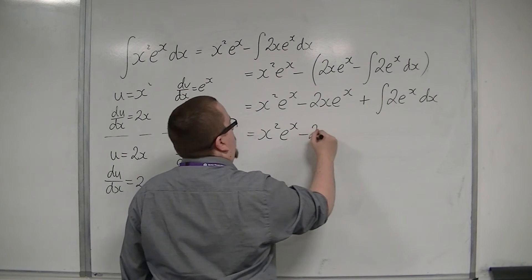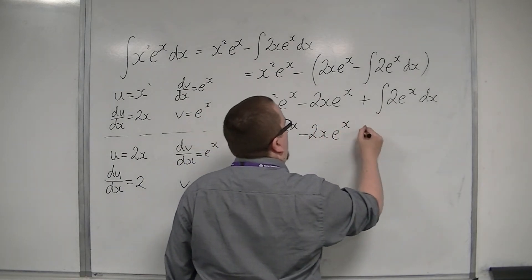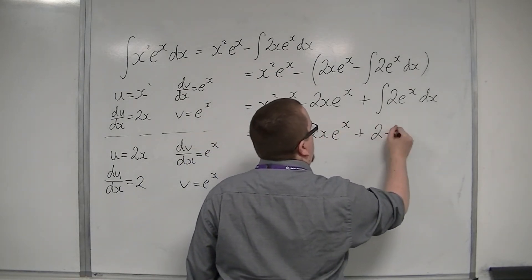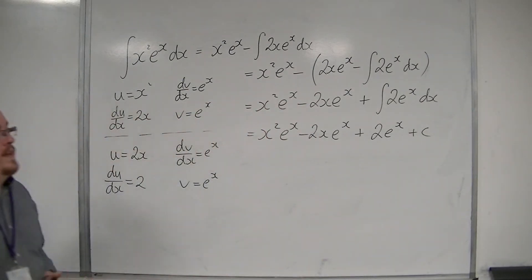So I've got x squared e to the x, take away 2x e to the x, plus, well that just integrates to 2 e to the x, and I've got a constant of integration on the end.